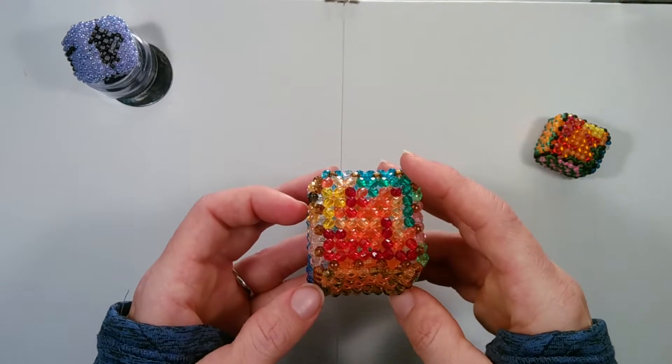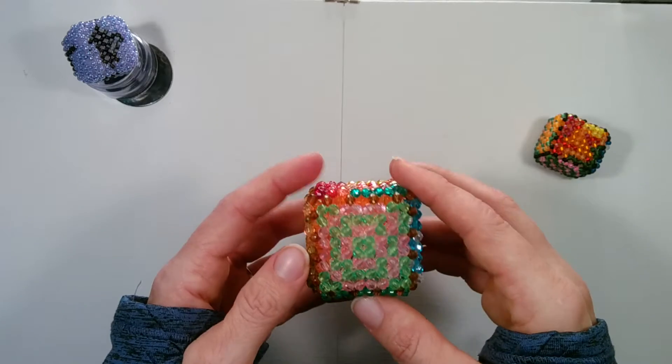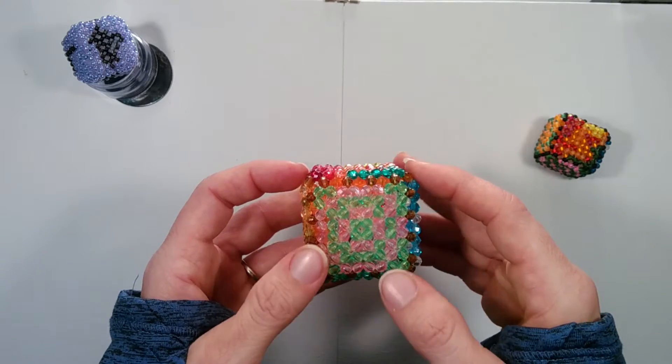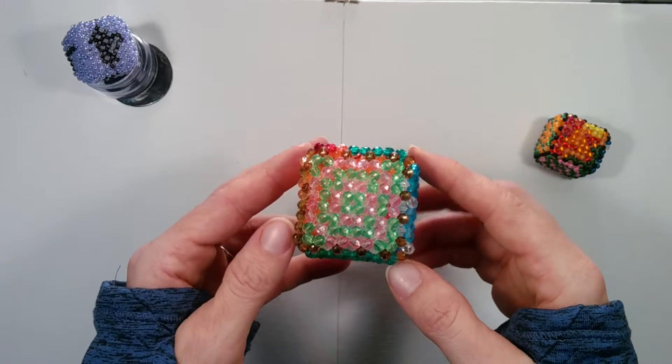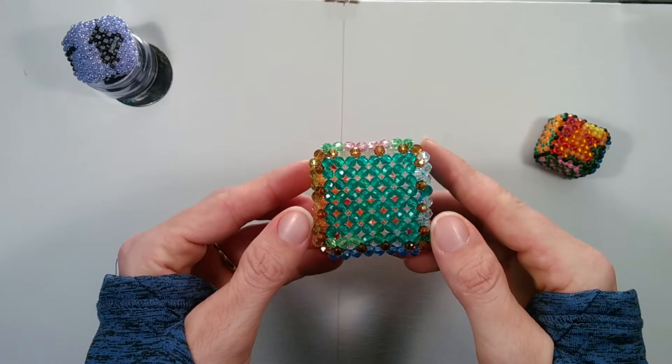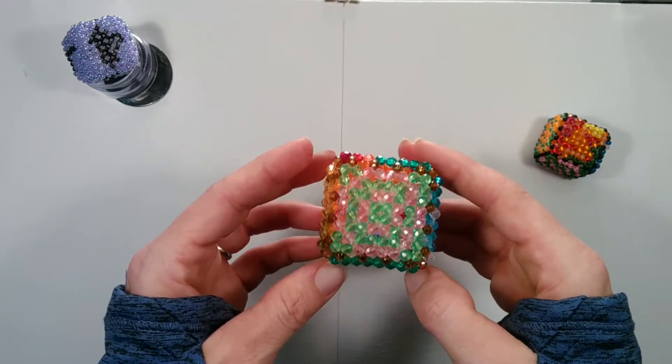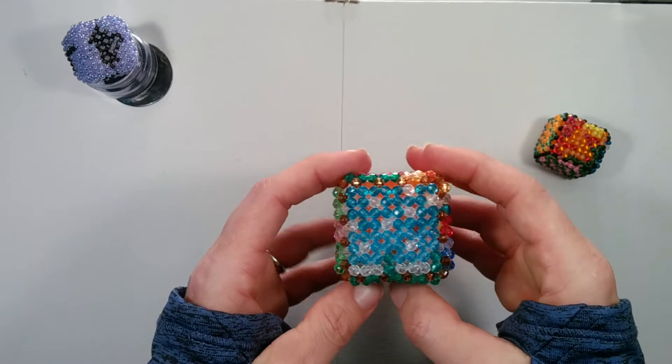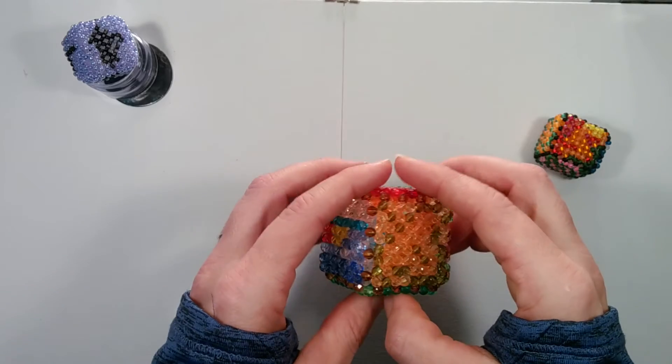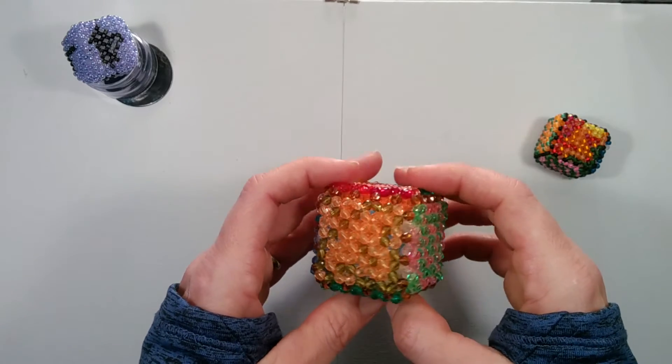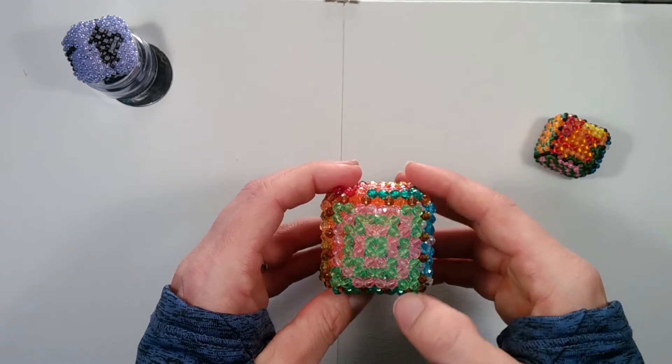Now let's check our faceted bead cube. Here is one six and T6 back to one and we have B6 back to one six. Then there's two six, three six, four six, and we end back at one six.